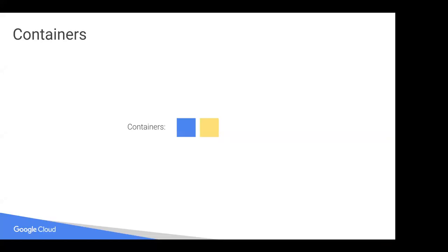Let's talk about the constructs of Kubernetes, because it'll help with the next demo on GitLab. We start with containers, but Kubernetes groups containers into what's called a pod. The pod is the smallest schedulable unit — it can contain a single container, which is quite often the case, or it can contain multiple. Sometimes you may have two tightly coupled containers that really need to be scheduled together, like a main app with a logging sidecar. That's why we have the concept of a pod.